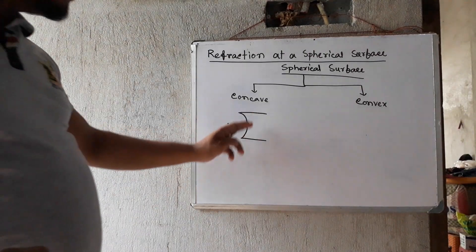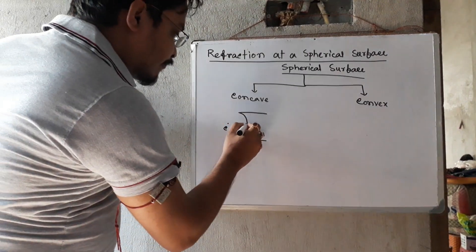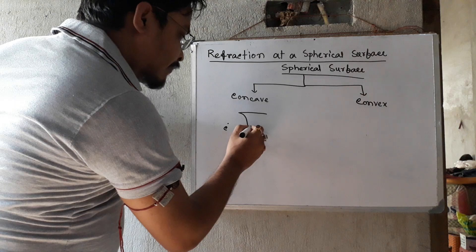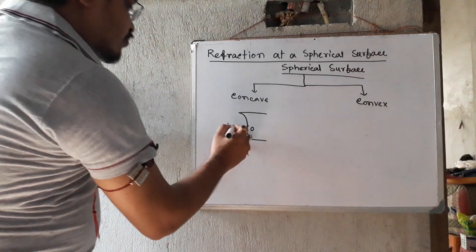Let's see the spherical surface. This is the middle of the boundary. This is the center of curvature.